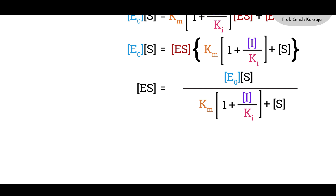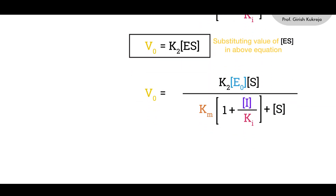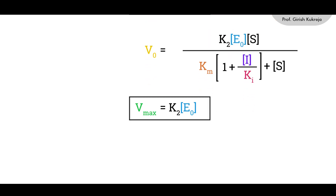The initial rate of reaction V0 depends on the concentration of ES and the rate constant K2: V0 = K2 · ES. Substituting the expression for ES: V0 = (K2 · E0 · S) / (Km · (1 + I/Ki) + S). We know that when the total enzyme E0 is multiplied by K2 we get Vmax, so Vmax = K2 · E0.